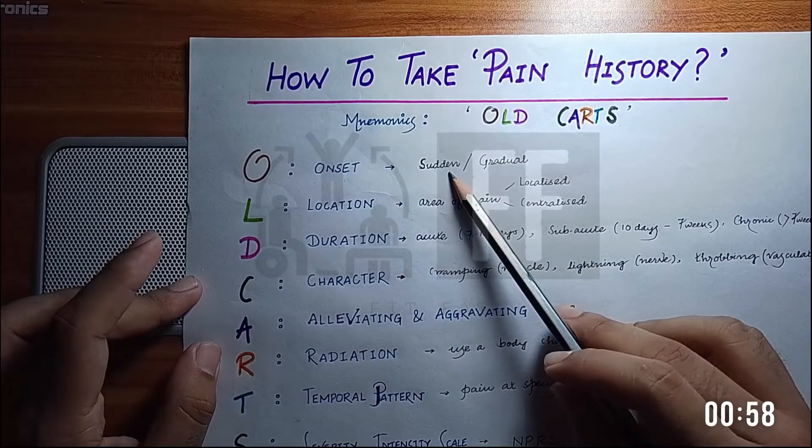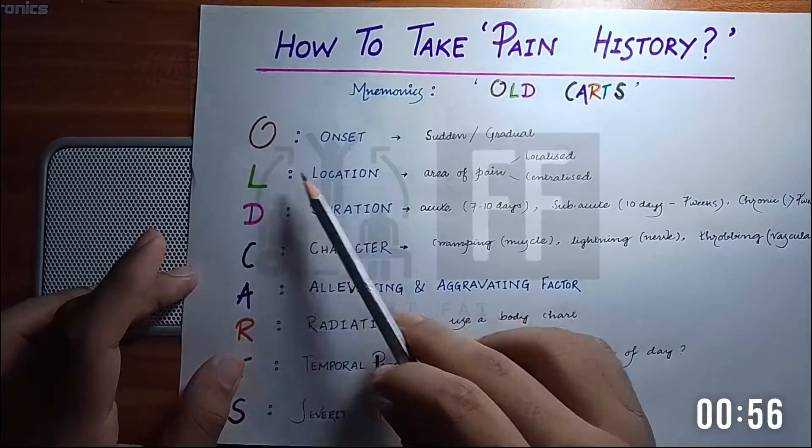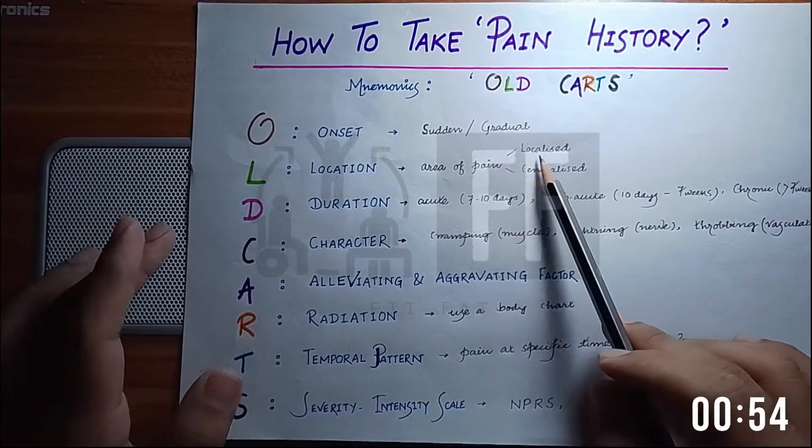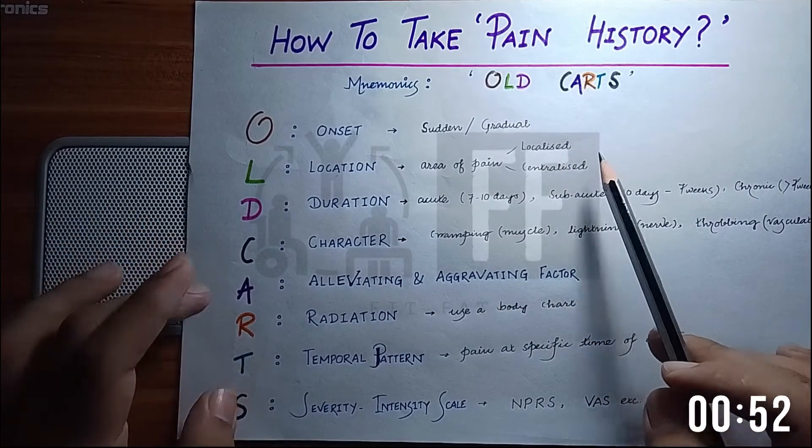O for onset of pain, either sudden or gradual. L for location of the pain - the area of pain, either localized or centralized.